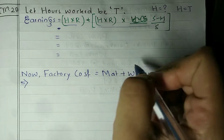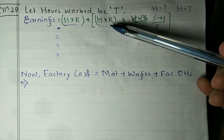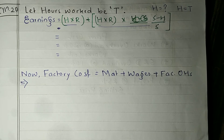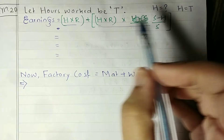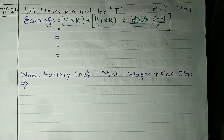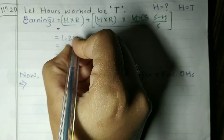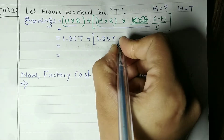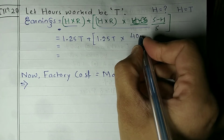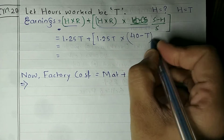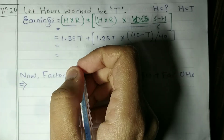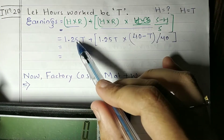Using the Rowan Plan formula, total earnings = H×R (time wage) + H×R×(S−H)/S (bonus part). Substituting values: H = T (assumed), R = 1.25, so total earnings = 1.25T + 1.25T × (40−T)/40.